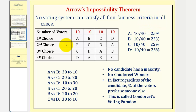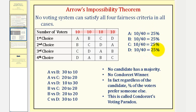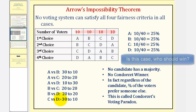Looking at this preference table, here's an example where there's no voting system that will satisfy all four fairness criteria. Notice each of the four rankings receives 10 votes, and we have a total of 40 voters. Notice that no candidate has a majority, where each candidate has 10 first choice votes, leading to 25 percent of the total votes.